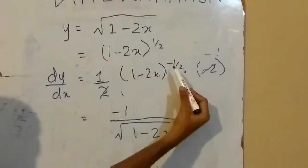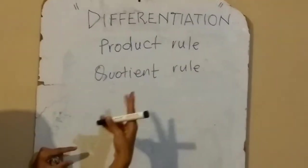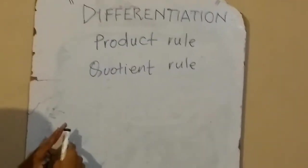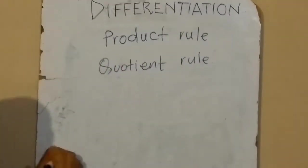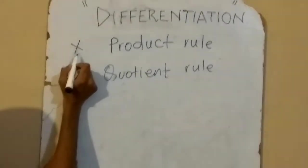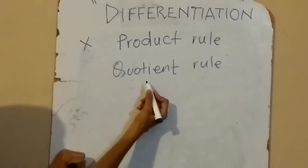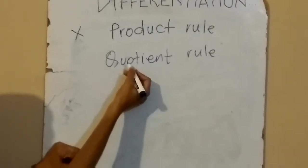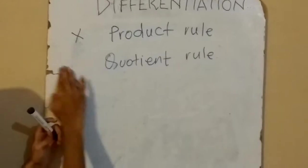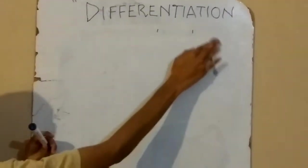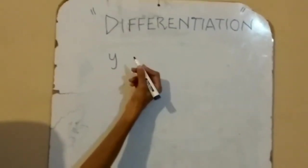As the power is minus 1/2, when it moves to the denominator the minus becomes positive. We have two types of differentiation rules: product rule and quotient rule. The product rule applies whenever functions are multiplying and they are composite functions. Whenever composite or complex functions are dividing, we apply the quotient rule.